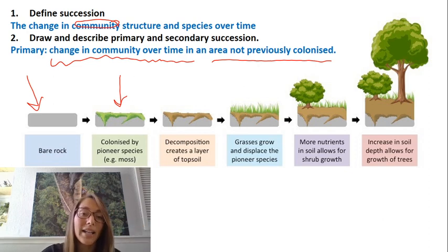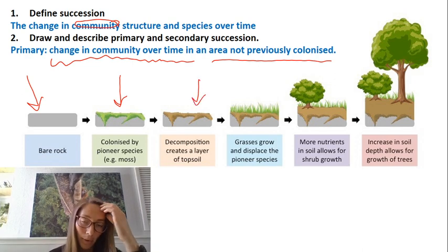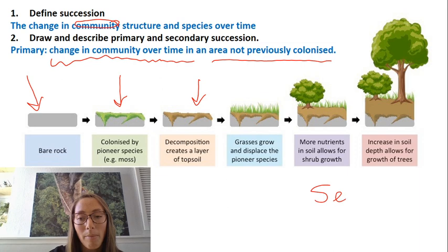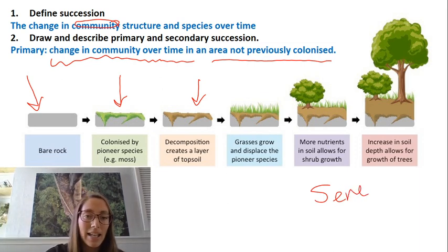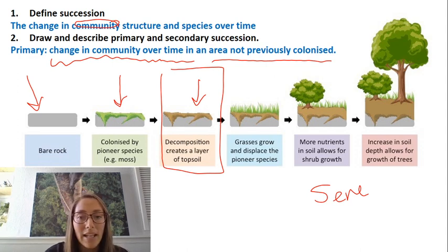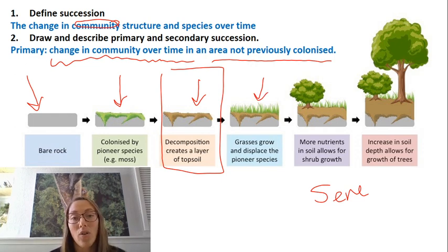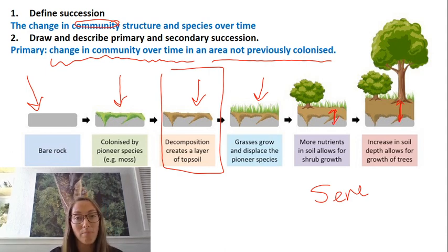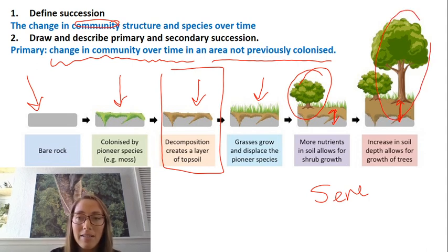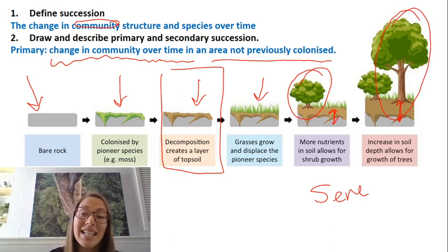These organisms decompose and start to build up a thin layer of topsoil, creating a change in that sere — a stage in succession. Now the environment has changed from bare rock, and grasses can come and live on that topsoil. Gradually the soil gets deeper, allowing bigger and bigger plants. In the next sere we get small shrubs or bushes, and eventually a massive tree is able to produce large roots into the thick soil.